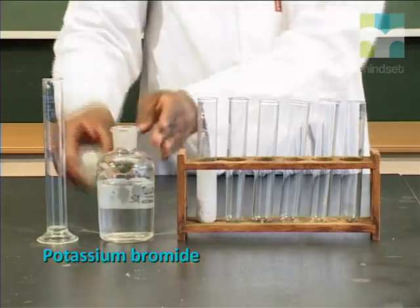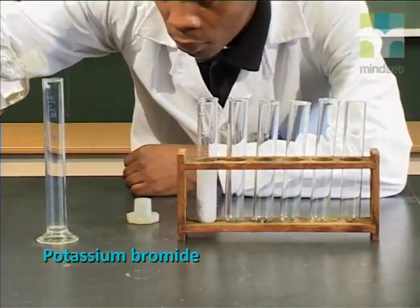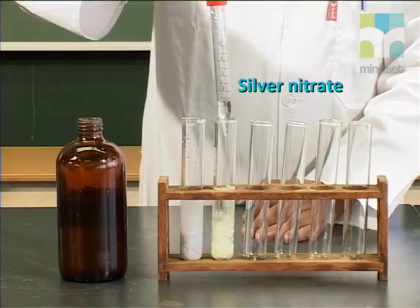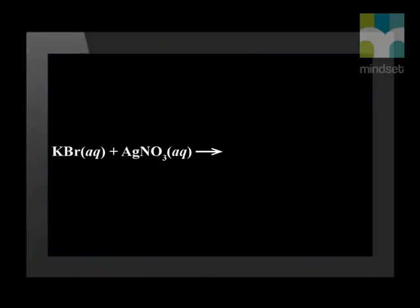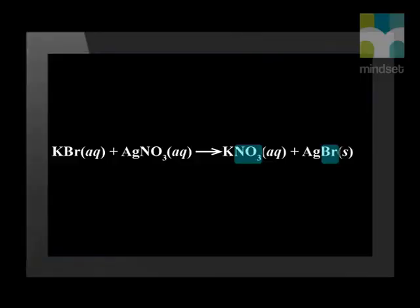The next test we will do is for the presence of bromide ions. This time, we will start with the substance that we know contains bromide — potassium bromide. When we add silver nitrate to the potassium bromide solution, a pale yellow precipitate forms. This gives us an indication that there may be bromide ions in the solution. Can you represent what happened in a balanced chemical equation? We start with potassium bromide and silver nitrate. Again, remember this is an ion exchange reaction, so the Br⁻ and the NO₃⁻ ions swap. The products are potassium nitrate and silver bromide. Because both ions of the two ionic solutions swap, we call this a double displacement reaction.